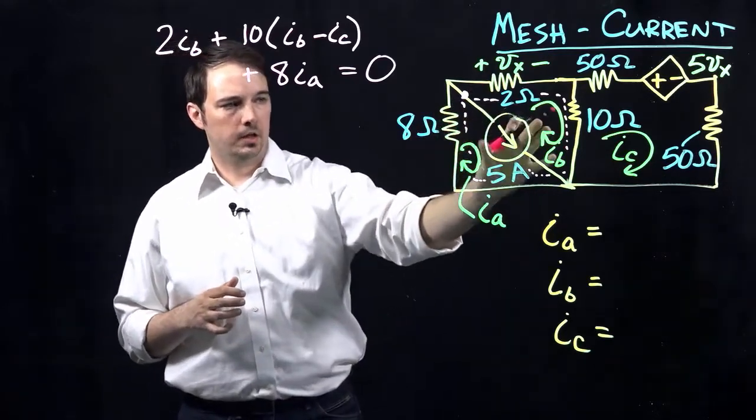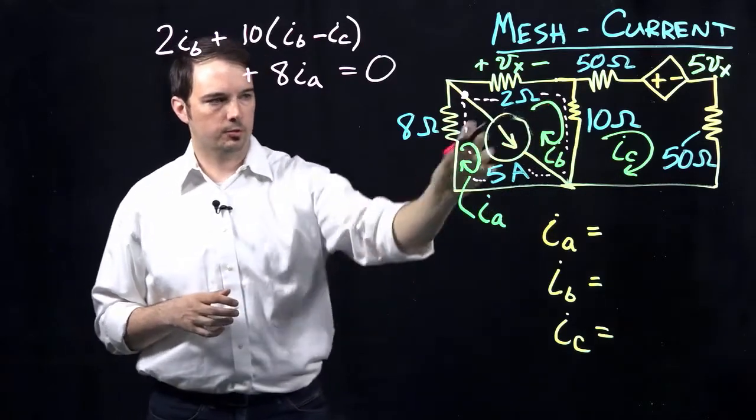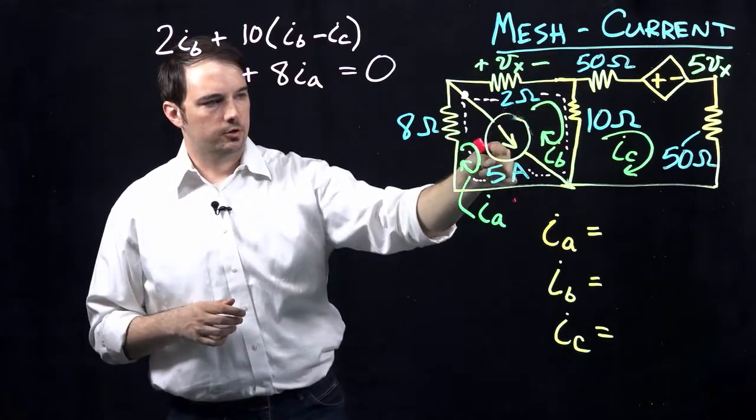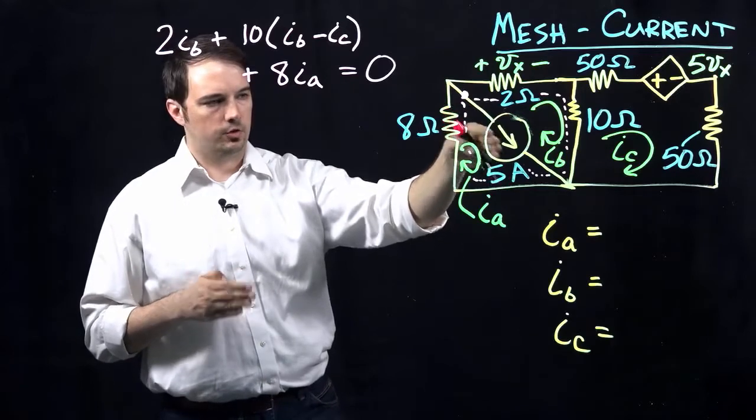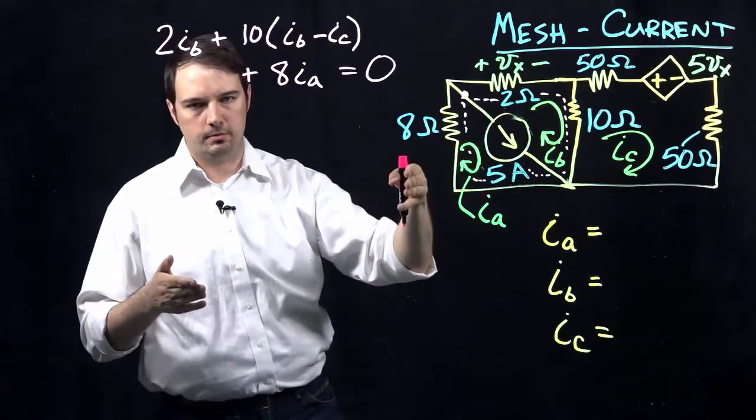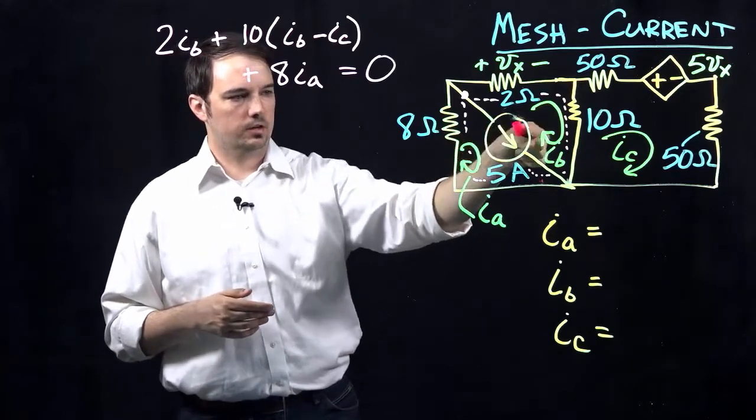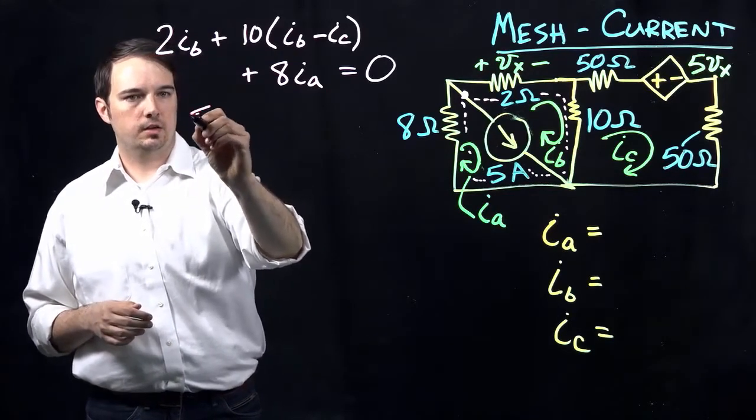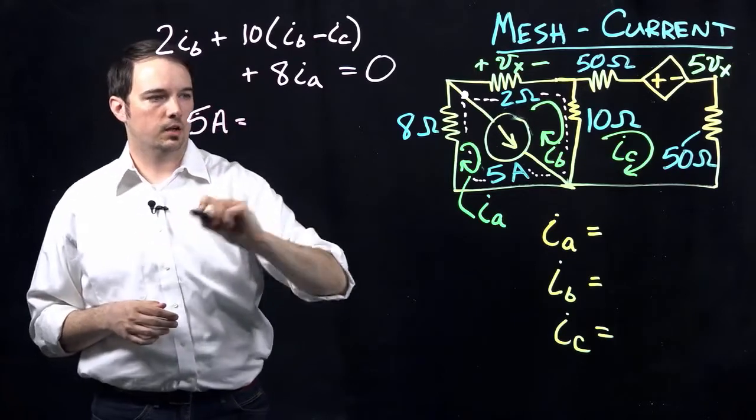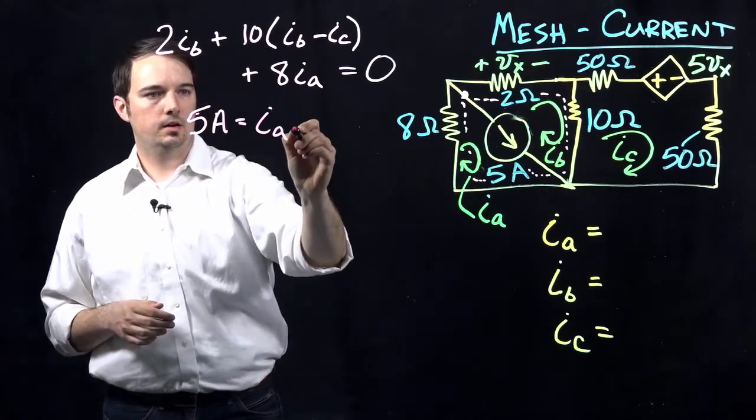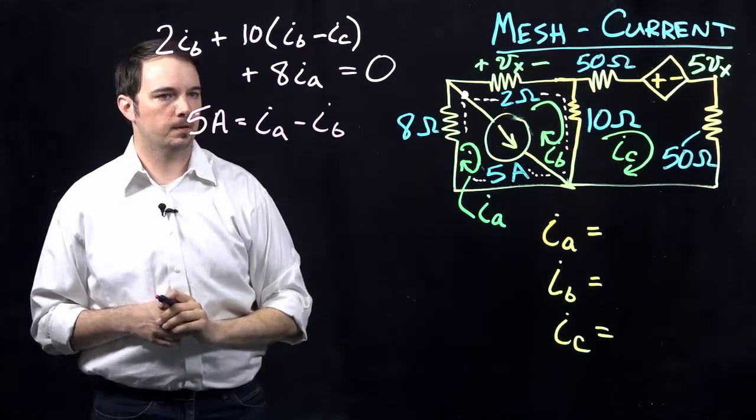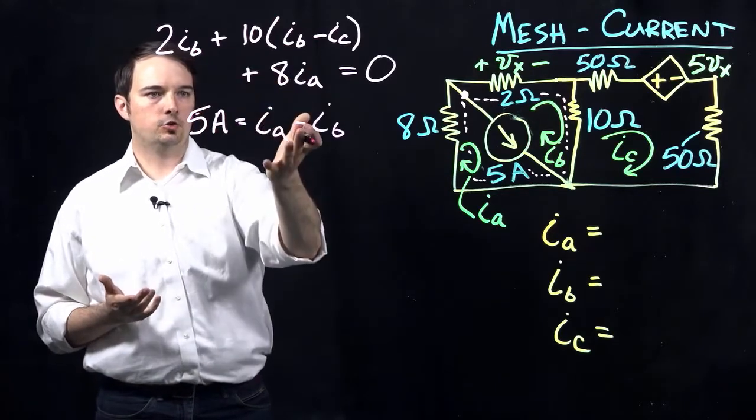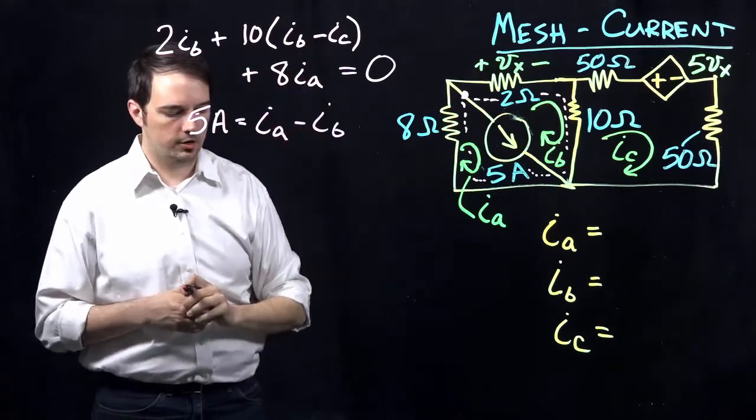Now how do we relate these two mesh currents IA and IB through this current source, this 5-amp current source? I look at what direction that current source is traveling, and start with the mesh current traveling in the same direction. IA is traveling in that direction, but IB is traveling in the counter direction. So the 5-amp current source tells us the difference: IA minus IB equals 5. That'll be another equation we'll need to plug everything back in, but I see I have two equations here yet I still have three unknowns overall.